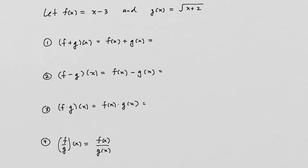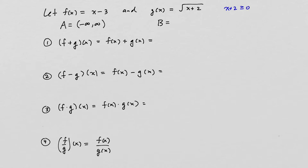Let's take a look at another example. This time f of x is x minus 3, and g of x is the square root of x plus 2. The domain of f, set A, is all real numbers. However, the domain for g, set B, has restrictions because whatever is inside the square root cannot be less than zero. So x plus 2 must be greater than or equal to zero, meaning x is greater than or equal to negative 2. The domain for g is negative 2 to infinity, including negative 2.